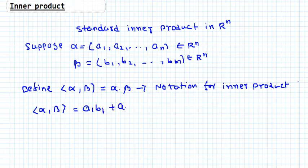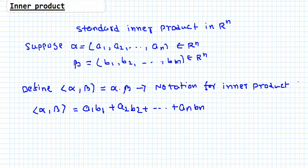This is called the standard inner product: a1·b1 + a2·b2 + ... — you may already know this type of product from physics; it is also called the dot product of two vectors alpha and beta, which is coordinate-wise multiplication. You can see that since a1, b1, a2, b2, and so on are all real numbers, the multiplication and addition of real numbers gives a real number. So the product of two vectors defined in this way is a real number.